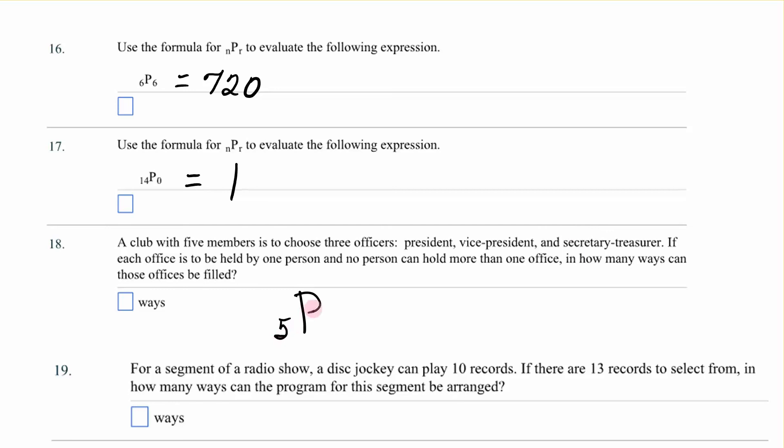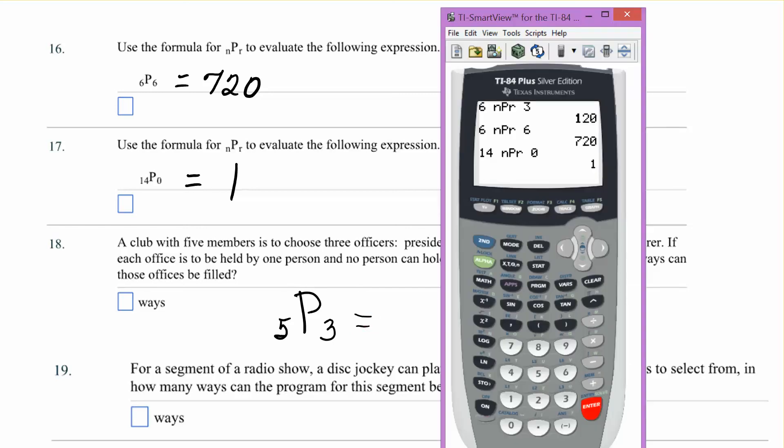So it is the permutation of five taken three at a time. So if I do that on my calculator, five math, number two, three at a time. So how many different threes can I get out of this? And the order matters. I get 60. There are 60 different slates of officers.